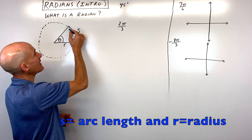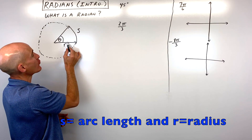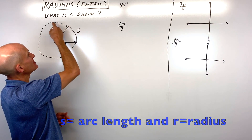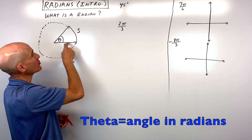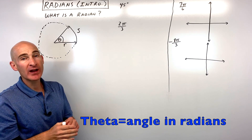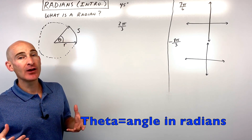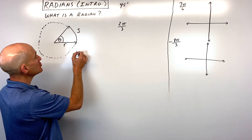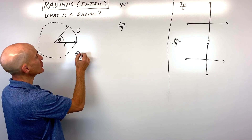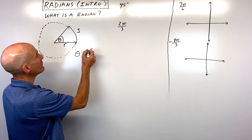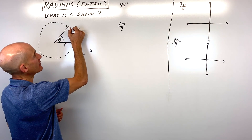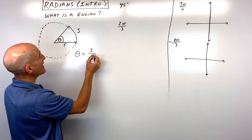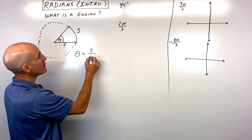So S is our arc length, and this is our radius — you can see this is kind of like a circle. What we want to do to find an angle in radian measure is to use this formula: it's the ratio of the arc length divided by the radius.